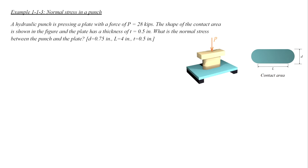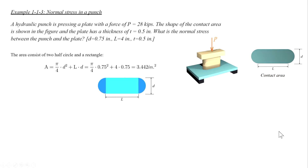The last problem is a hydraulic punch pressing a plate with a force P. The shape of the contact area between the punch and the plate is shown in the figure, and we want to determine the normal stress between the punch and the plate. Similar to before, we need force and area. The force is given as 28 kips, but we need to determine the contact area.